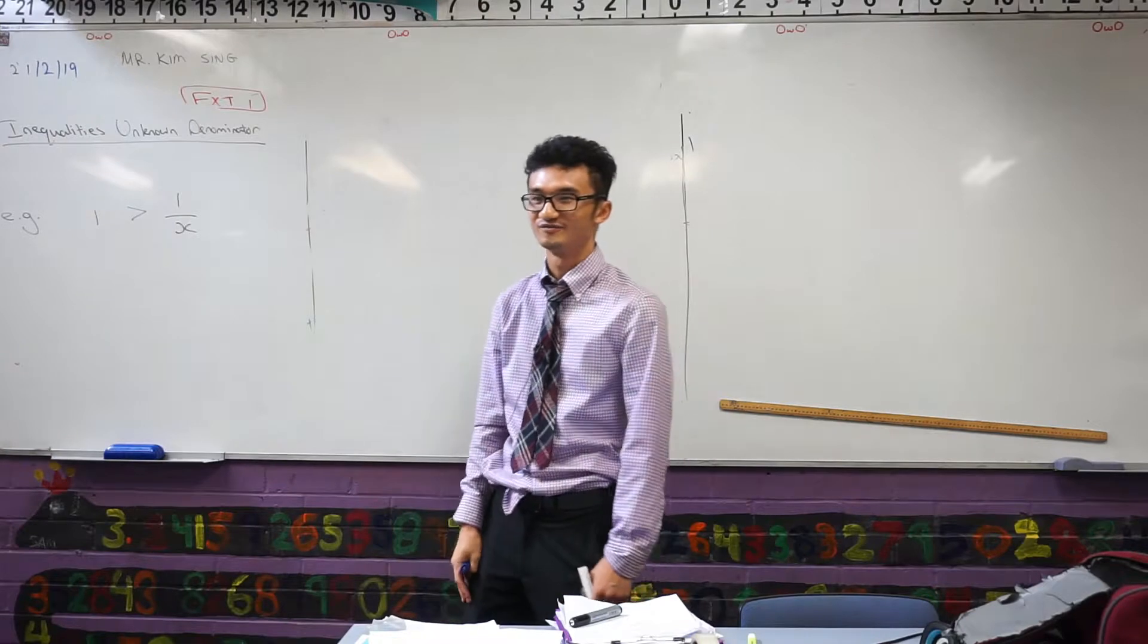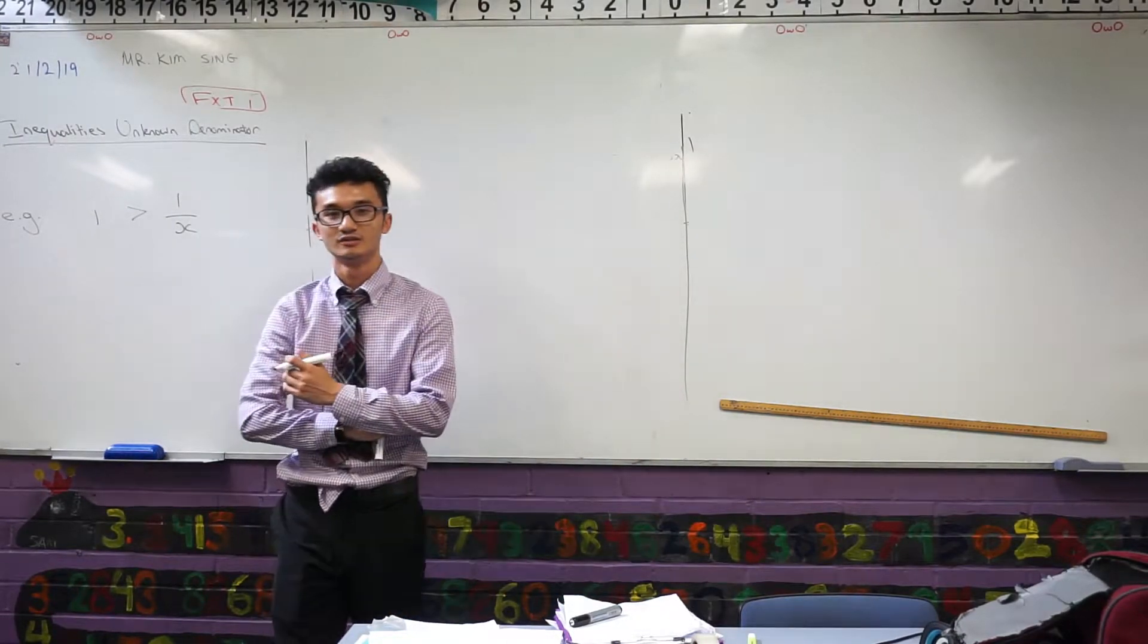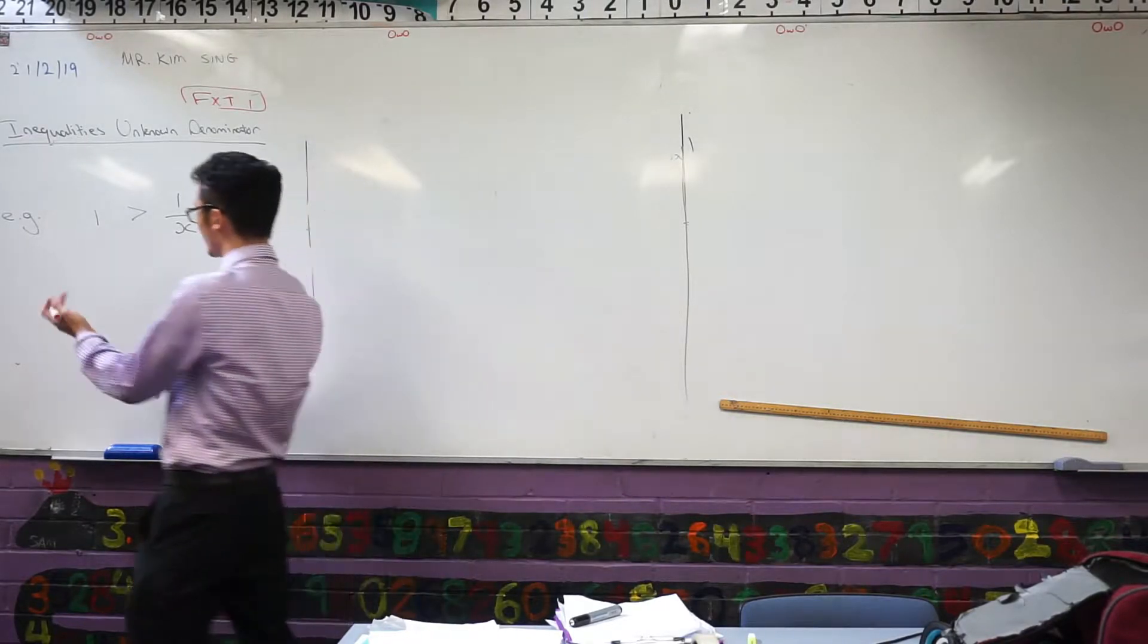When I have things I don't know, particularly in a fraction, what do I like to do? I like to get rid of them. How would I get rid of this fraction here? Times it by x. Multiply what's on the bottom. Let's try that.